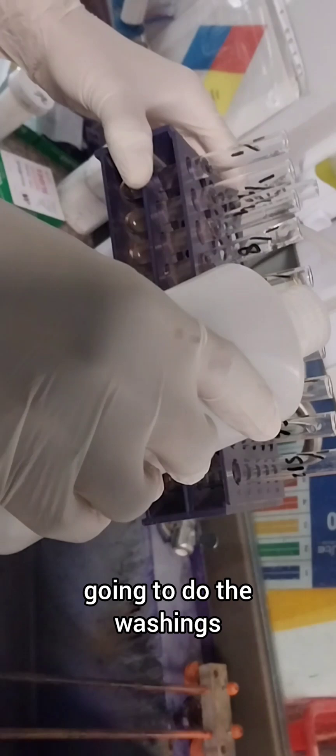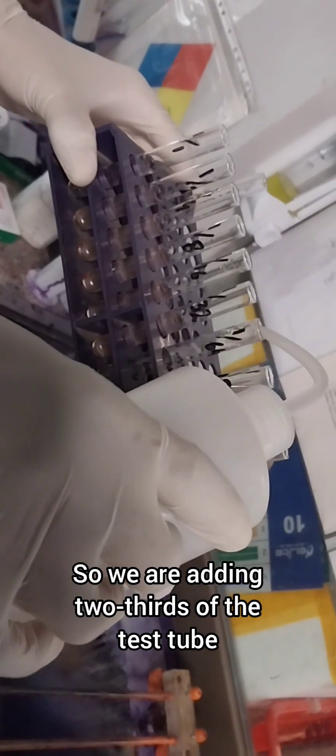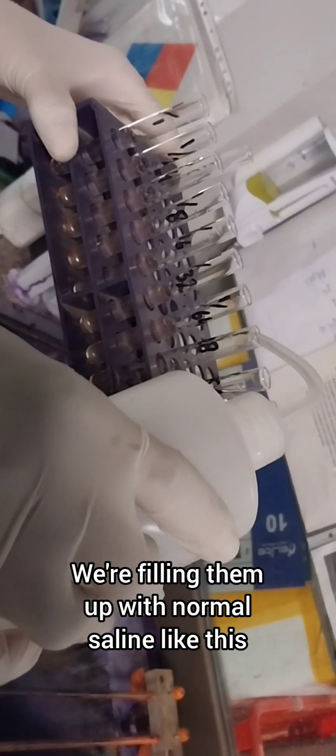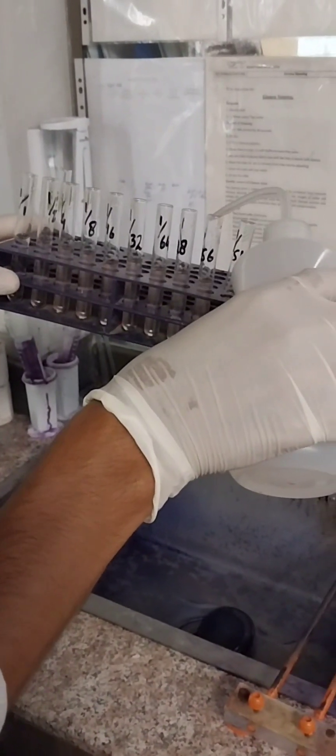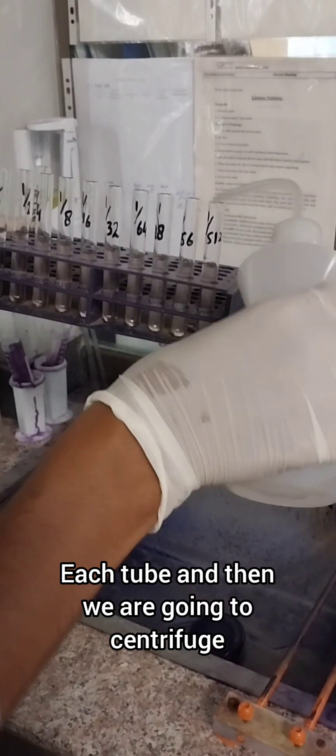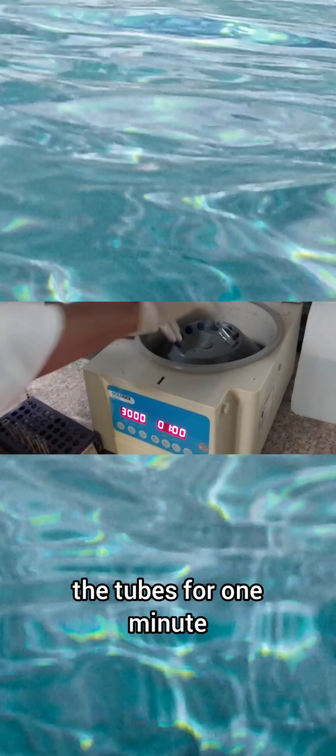After taking the incubation period, we are going to do the washings. We are adding two-thirds of the test tube, filling them up with normal saline like this, each tube. Then we are going to centrifuge the tubes for one minute.